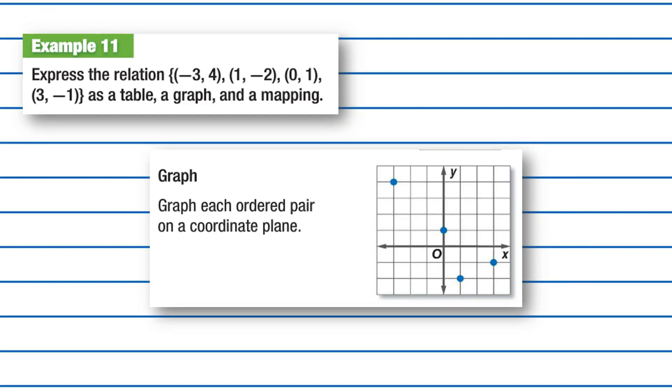Now, let's show it as a graph. These are just plotted points. Right here, let's see this one. Negative 1, negative 2, negative 3, and it's up 4. So, this one's negative 3, 4. And this one would be 0, 1. And now, I have 1, negative 2. I have 1 left, so I should have 3, negative 1, which is what I have here.